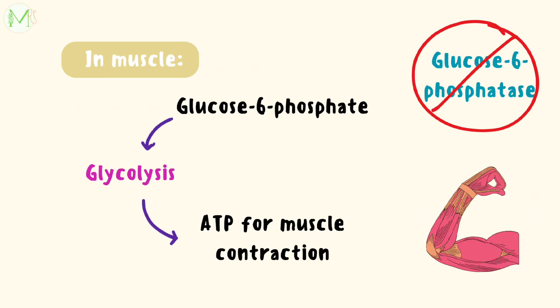This is the case that happens in the liver. In the muscle, glucose will not be released into the bloodstream because muscle doesn't have glucose-6-phosphatase enzyme. So in muscle, glucose-6-phosphate undergoes glycolysis to produce ATP for muscle contraction.